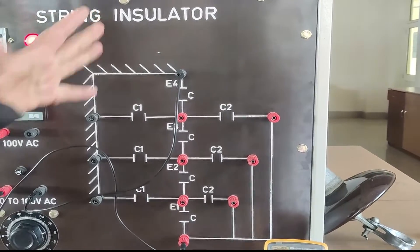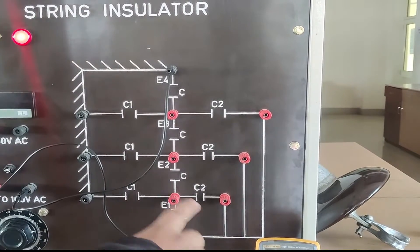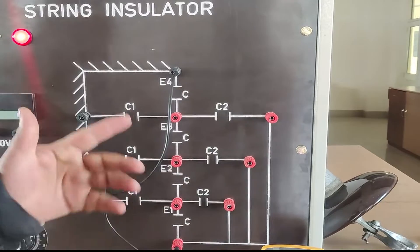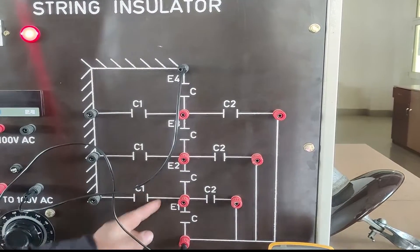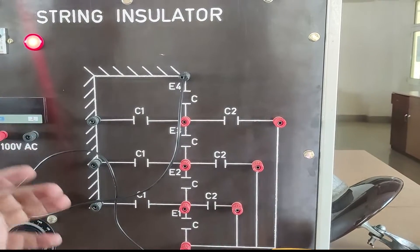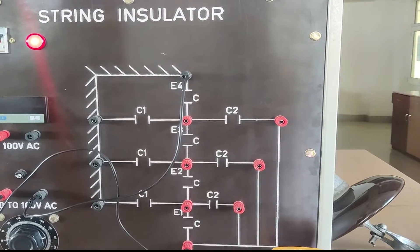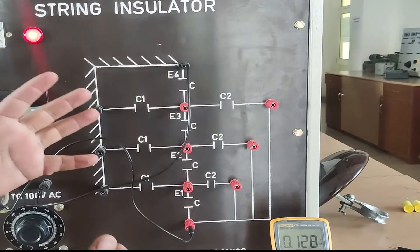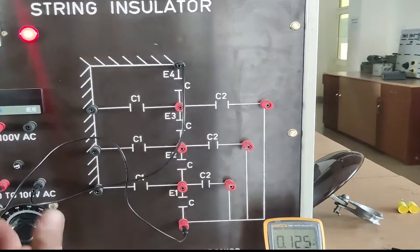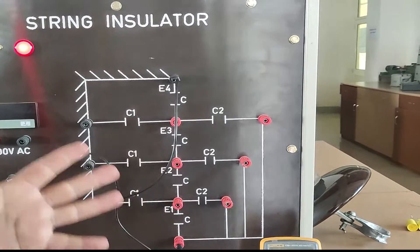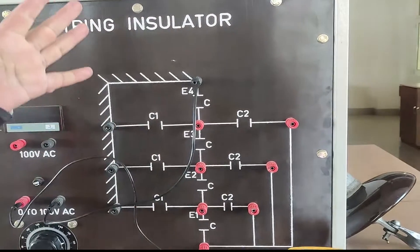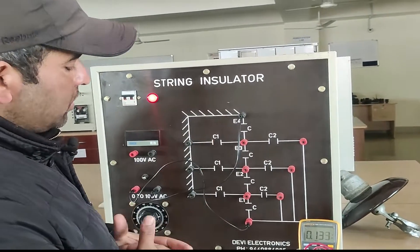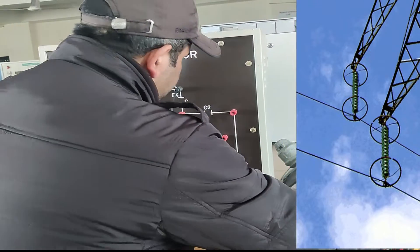We calculate a parameter called string efficiency, which is calculated using the formula: total applied voltage divided by the number of discs multiplied by the voltage across the bottom disc. The voltage across the bottom disc is greater than 15 volts, so the string efficiency will be well below 100%. If it comes out to be 60%, it means 40% of the insulation is unutilized — only 60% is getting utilized.